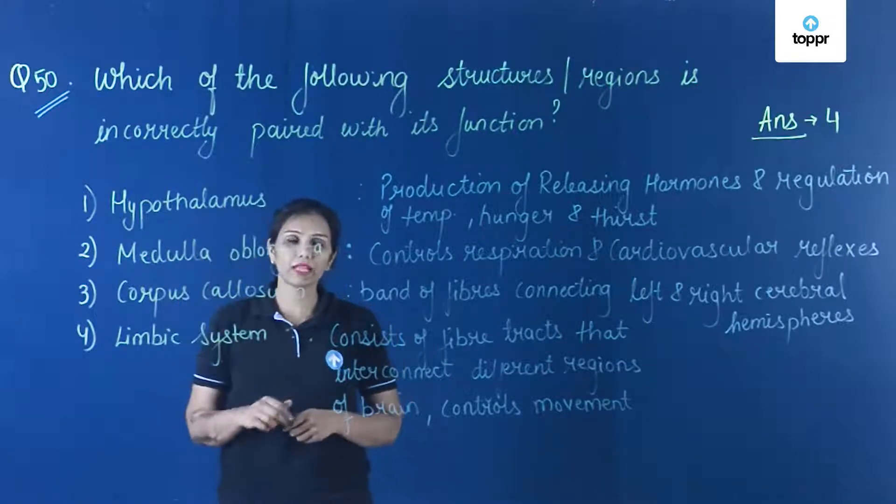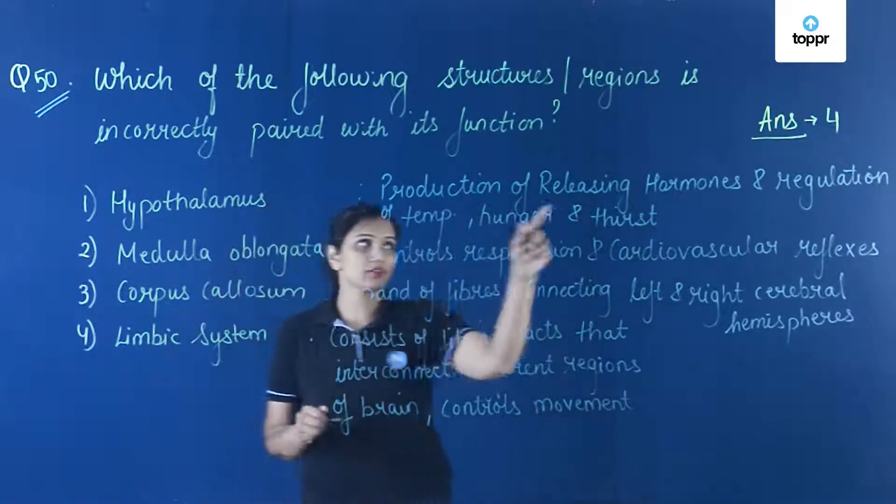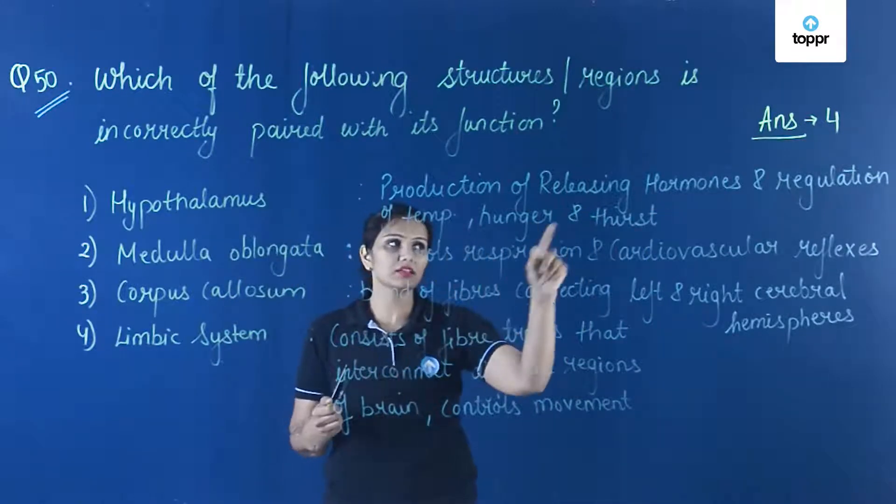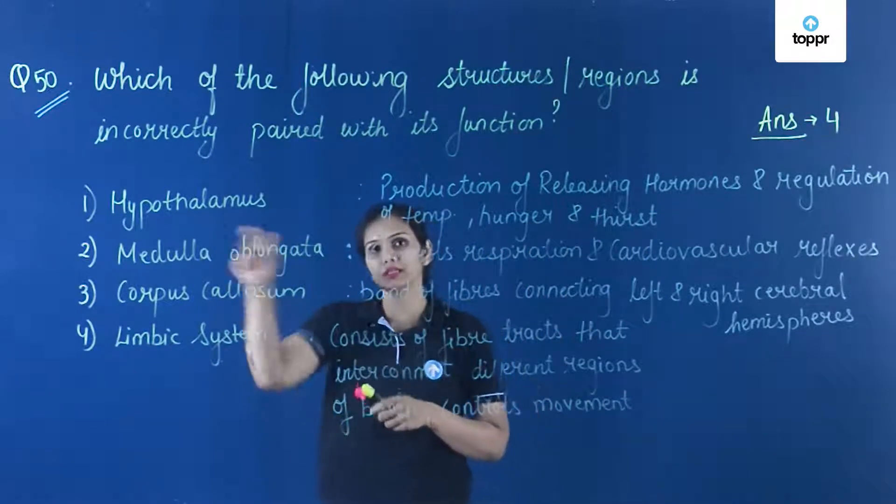First one is hypothalamus, that is production of releasing hormones and regulation of temperature, hunger and thirst. This option is correct.